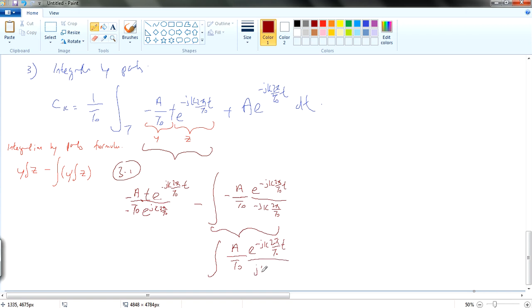T over jk. And then you integrate which becomes A T0 e^(-jk 2π/T0 t), and then this is jk 2π T0, and then this is jk square.